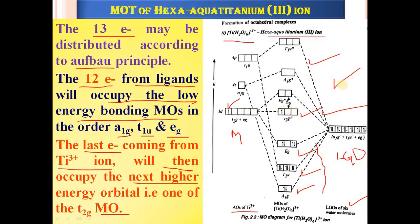In [Ti(H₂O)₆]³⁺, one electron comes from the metal (Ti³⁺) and 12 electrons come from the ligand group orbitals. This one electron from the metal finally goes into the T2G non-bonding orbital. The energy gap between T2G and EG* is very small because water is a weak field ligand.